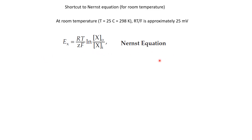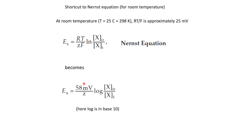If we apply the Nernst equation at room temperature — approximately 25 degrees Celsius or 298 Kelvins — we can plug in 298 for T. With R and F as constants, the factor RT/F becomes 25 millivolts. Further replacing the natural log with log base 10, the equation can be rewritten as 58 millivolts over z, times the log of the concentration ratio outside over inside. So we just need to know the concentration ratio and the valence of the ion to easily calculate the equilibrium potential.